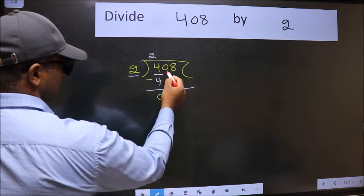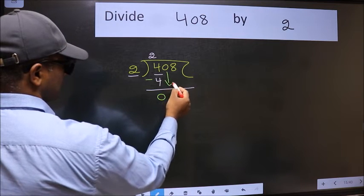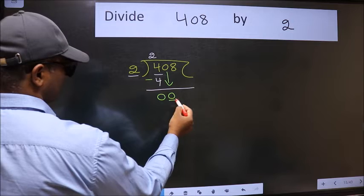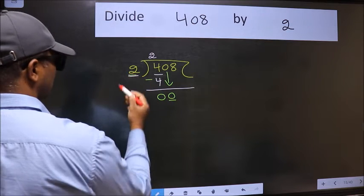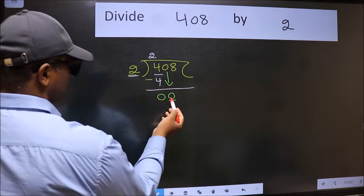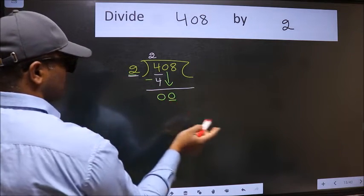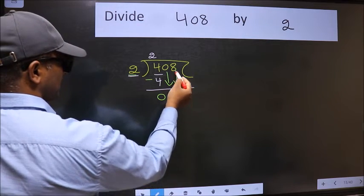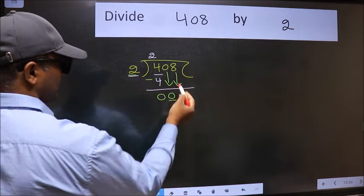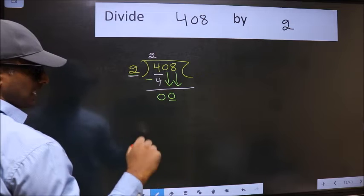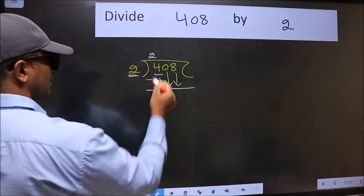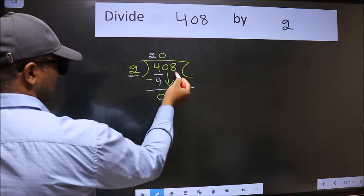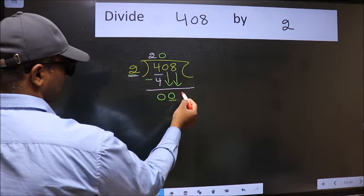After this, bring down the beside number. So 0 down. Now here we have 0 and here 2. 0 is smaller than 2, so we should bring down the second number. And the rule to bring down the second number is we should put 0 here, then only we can bring this number down.